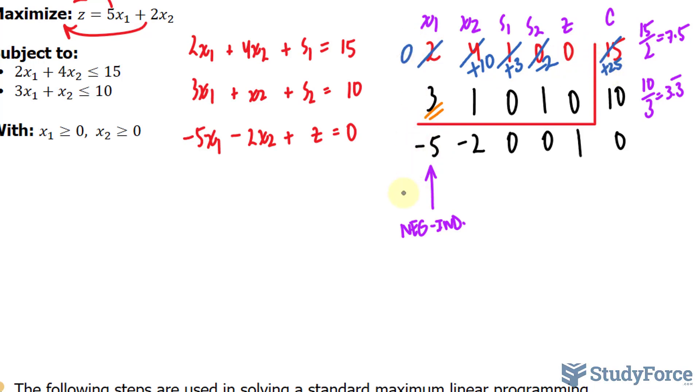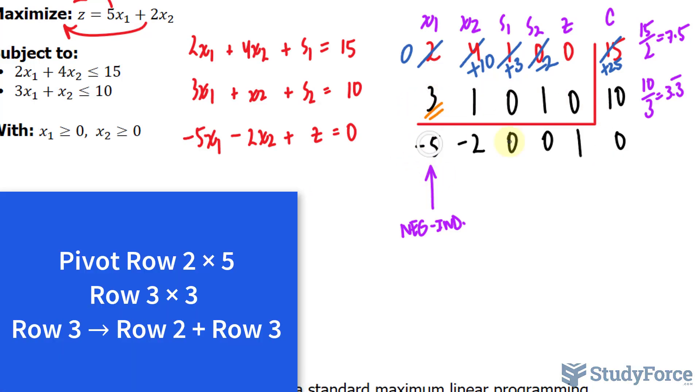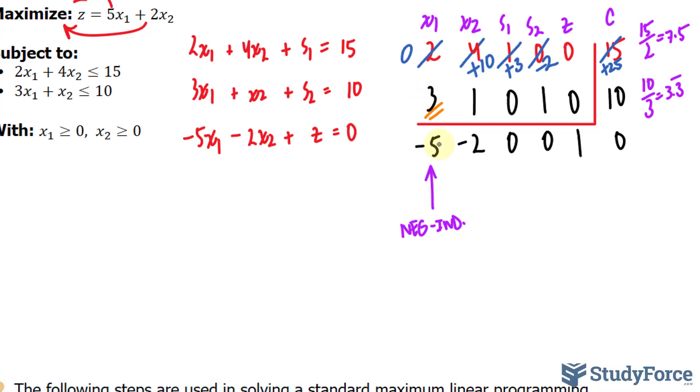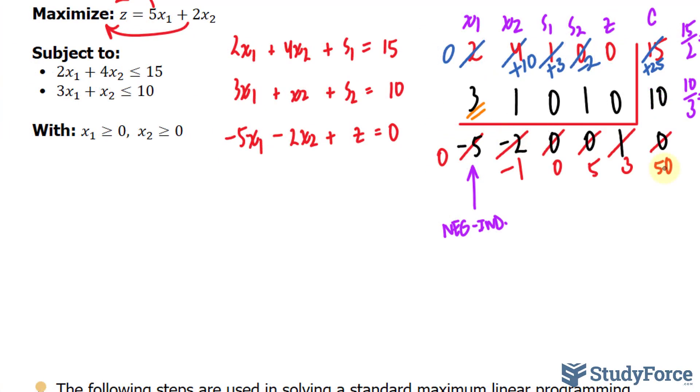We want to make that into a 0 as well. I'll multiply this whole row by 5 and this whole row by 3. Then I'll add row 2 and row 3 together. This times 5 is 15. This times 3 is negative 15. Adding row 2 and row 3, and then replacing that with our answer makes this into a 0. 1 times 5 is 5. Multiplying negative 2 by 3 is negative 6. 5 plus negative 6 is negative 1. Doing the same thing for these, you should end up with 0, 5, 3, and 50.